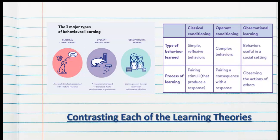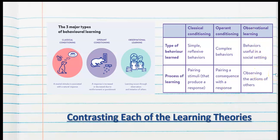Let's contrast each of the learning theories. Classical conditioning involves simple reflexive behaviours, with the process involving pairing stimuli to produce a response. Operant conditioning involves complex behaviours and pairing a consequence with a response involving voluntary behaviours. Observational learning covers behaviours useful in a social setting and involves observing the actions of others.